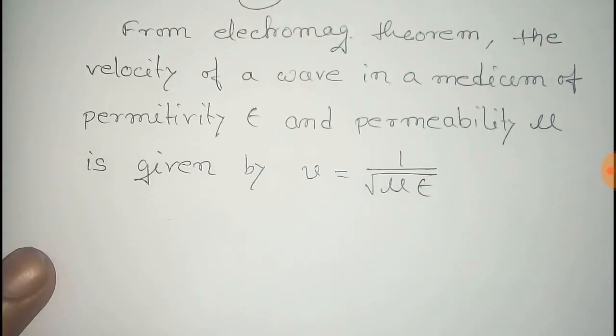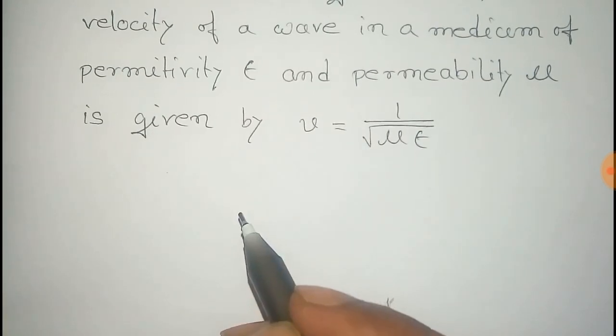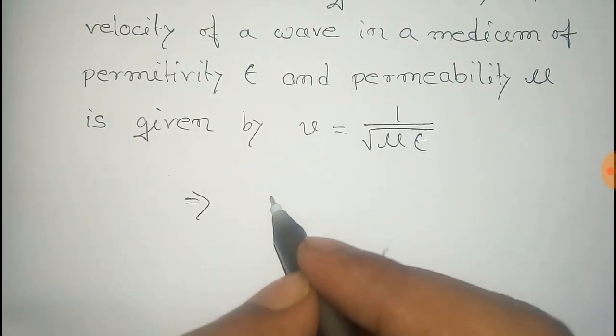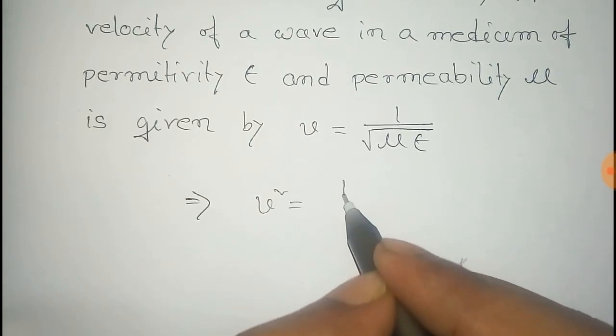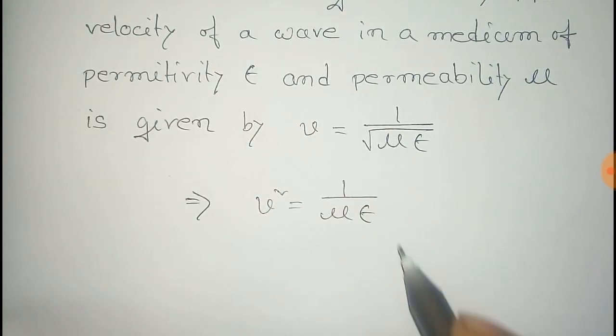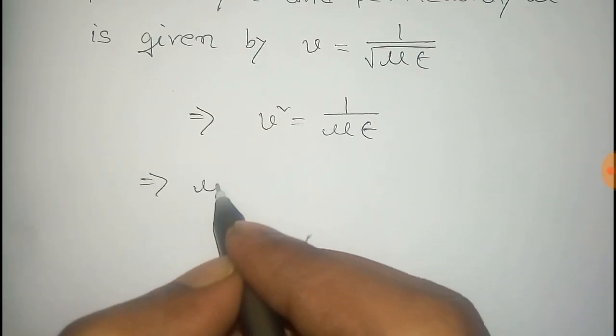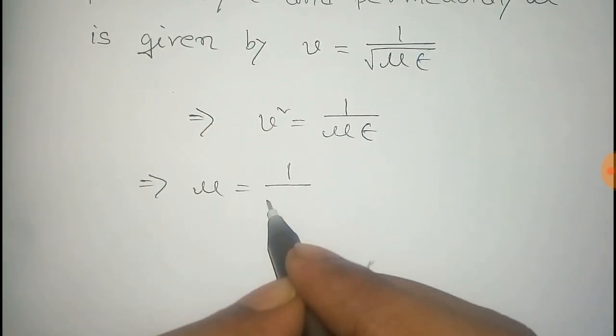And from this, v square equal to 1 by mu into epsilon, and from this, mu equal to 1 by v square epsilon.